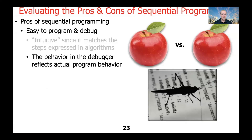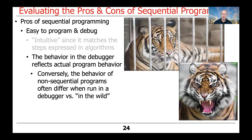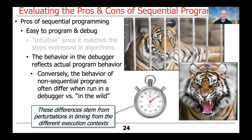Another benefit of sequential programming is that the behavior in the debugger reflects the actual program behavior quite precisely. Conversely, the behavior of concurrent and parallel programs often differs when running a debugger versus being run at runtime in a customer deployment. These differences stem from perturbations in timing in different execution contexts. When you set breakpoints and run in a debugger with a non-sequential program, threads may run differently than they would outside the debugger, causing all kinds of headaches. Sequential programs are typically easier to debug.